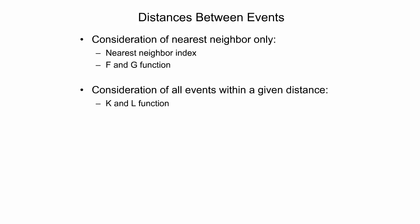A common approach around this problem is to determine the average number of all events that are within a given radius from an event in the pattern, and repeat this procedure for a range of radii. The K and L function, which are the focus of this presentation, use this approach.